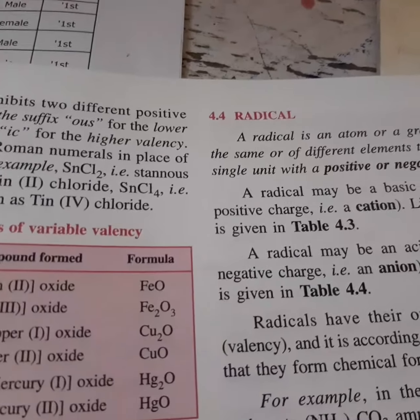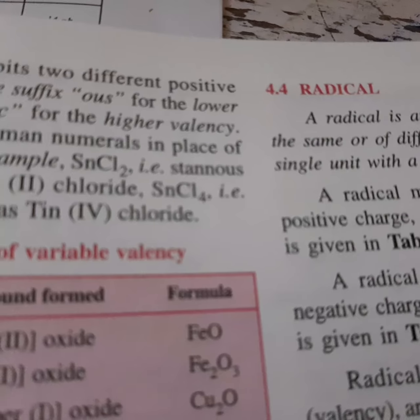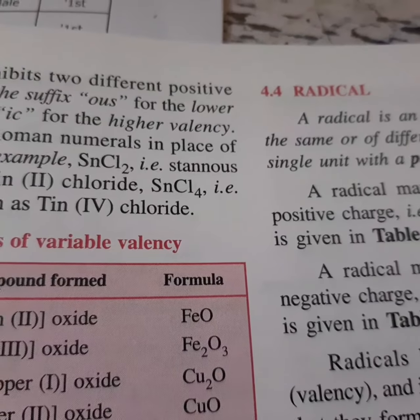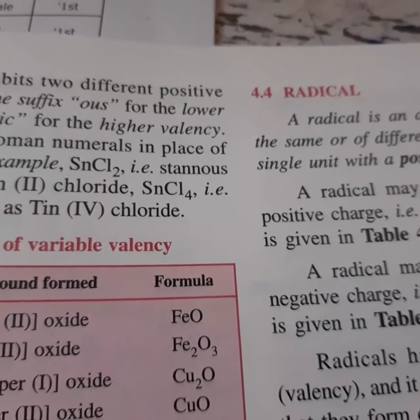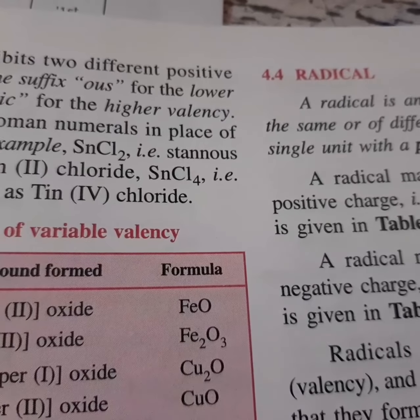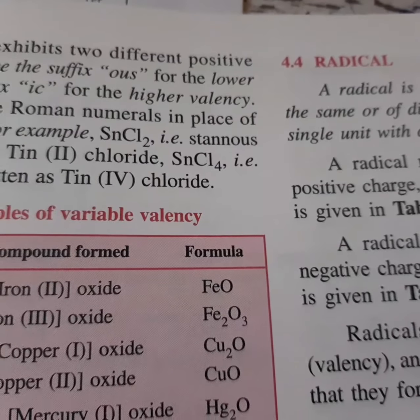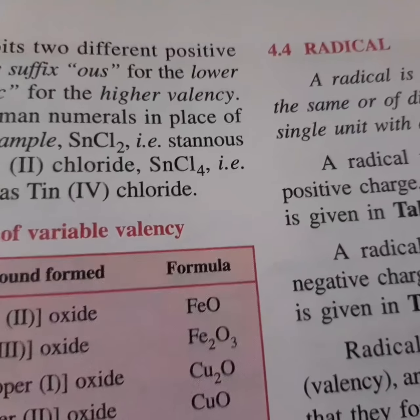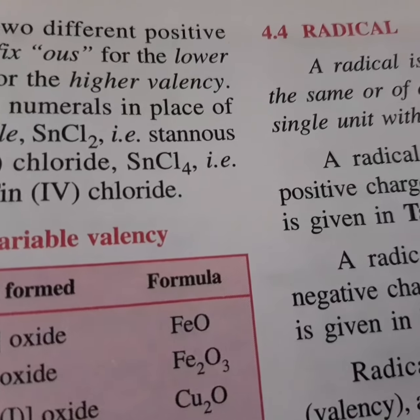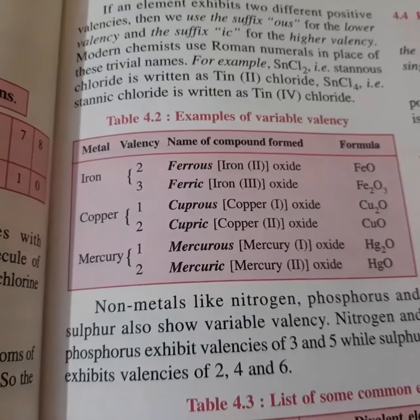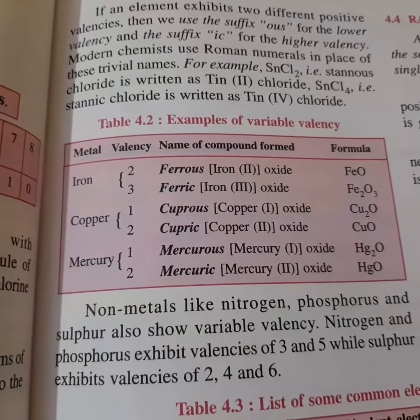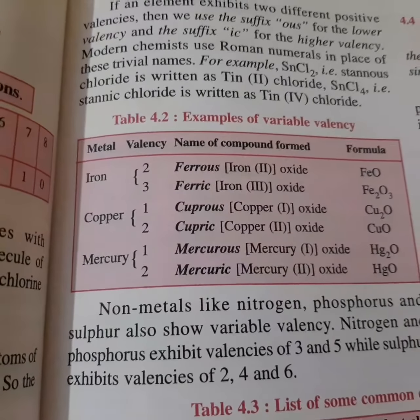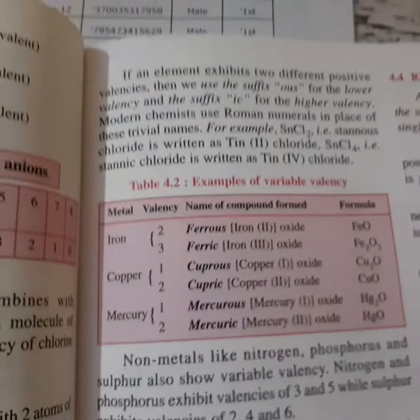Hi, hello, this is Surinder Singh. We are doing chemistry for class 9th. On the previous day we covered elements and their symbols, the significance of symbols, valency and how to find it, univalent, divalent, trivalent, anions and cations, and variable valencies — where the same element shows two or more valencies. Today we will be studying the next topic, which is about radicals.